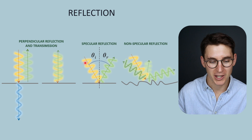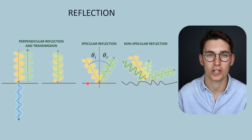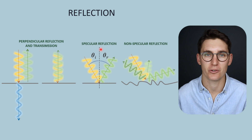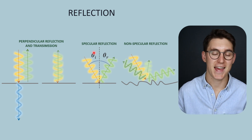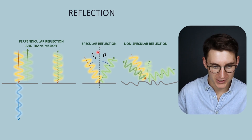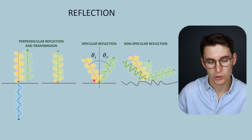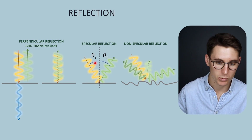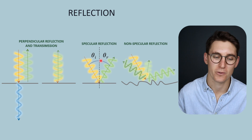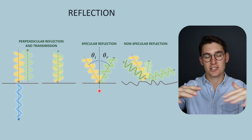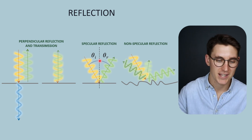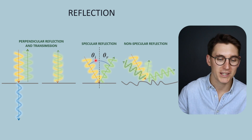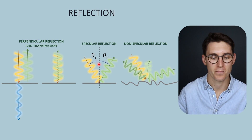What happens if that beam comes in at an angle to that large flat surface? This is what's known as specular reflection. The angle from the perpendicular line to the reflector and the incident ultrasound beam is the incidence angle. If the surface is large and flat, the reflection angle will be equal to the incidence angle.